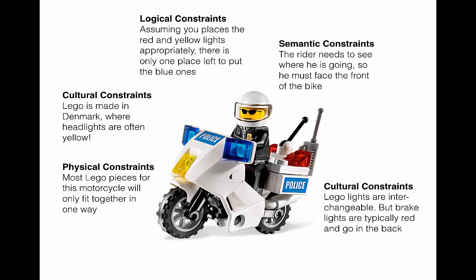And once you have placed the red and yellow lights, a logical constraint exists for the blue lights, because the only place left to put them is on the handlebars. Finally, a semantic constraint dictates that the rider goes on the bike facing the front — otherwise, he wouldn't be able to see where he was going.